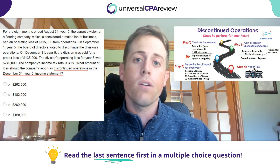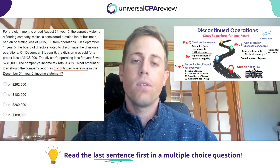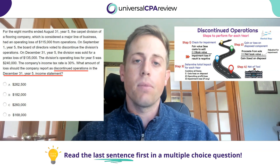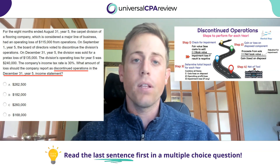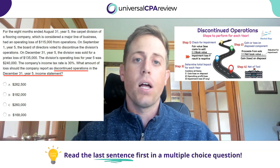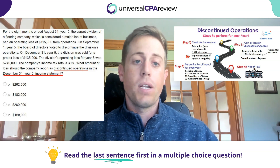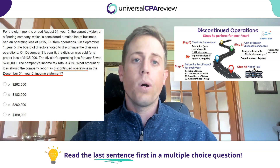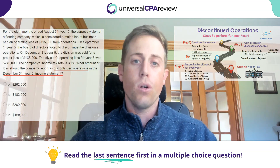We also know we're talking about year five, and we know we're talking about the income statement. When you think back to the mental map, there are three things that impact the income statement: gain or loss on disposal, any impairment loss, as well as the operating loss, cost, or profit for the given year. Now when we read back through the question, we know what we're focused on and can figure out how to apply that information — what we need and what we don't.